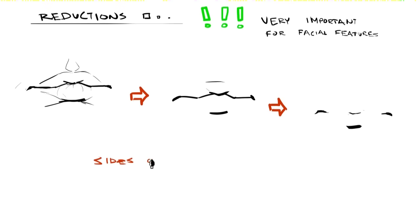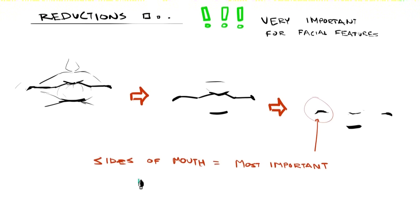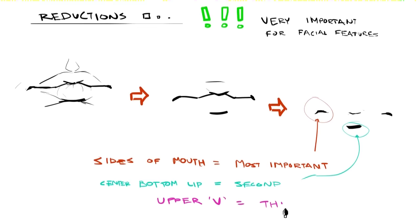The most important part is definitely the corners of the mouth — from a lighting standpoint these have the most depth. If you have to show just one thing, show the corners of the mouth. If you can show another thing, show the center of the bottom lip where the lip area shifts into the chin. You're not drawing the outline of the bottom lip, just the convergence of planes that happens right under the middle of it. Lastly, you can show a hint of that upper V — it's a dominant shape so it creates a little hint of ambient occlusion.